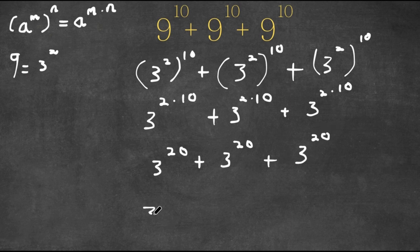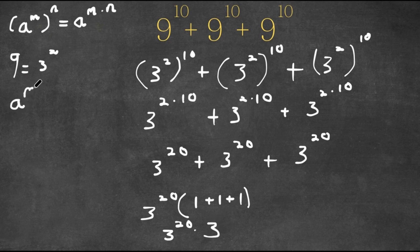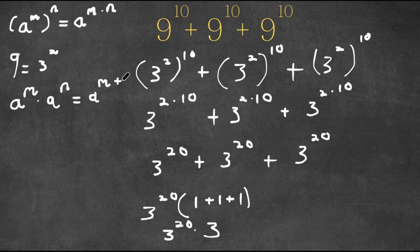And now, if we factor out 3 to the power of 20 from this, we get 3 to the power of 20 times — 3 to the power of 20 divided by 3 to the power of 20 is 1 — and the same goes for the other two. So now we have 3 to the power of 20 times 1 plus 1 plus 1, and 1 plus 1 plus 1 is 3. So now we have 3 to the power of 20 times 3. And if we have a to the power of m times a to the power of n, this is going to be a to the power of m plus n. So 3 to the power of 20 times 3 — well, 3 is the same thing as 3 to the power of 1 — so this would be 3 to the power of 20 plus 1, which is 3 to the power of 21.